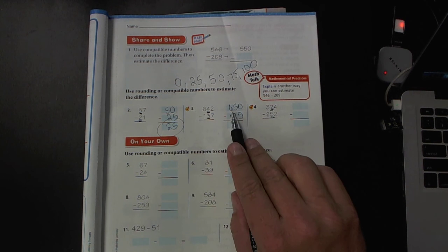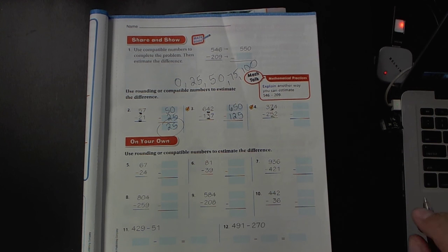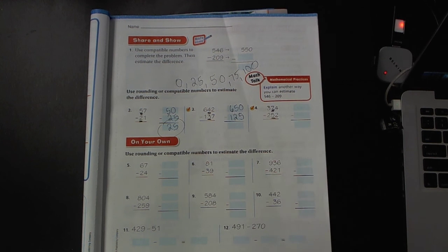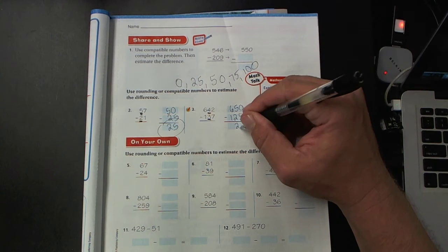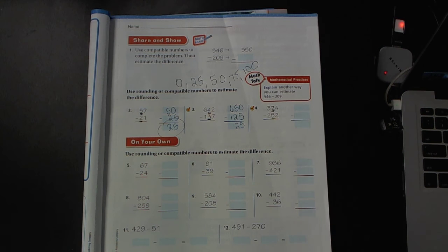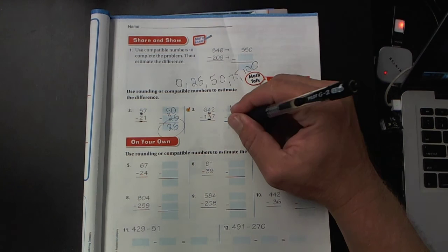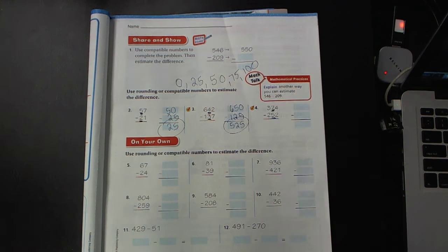Six dollars and 50 cents minus a dollar 25. You might be able to do that in your head. At least 50 minus 25 you could do in your head. 50 cents minus 25 cents is 25 cents. And then six minus one is five.